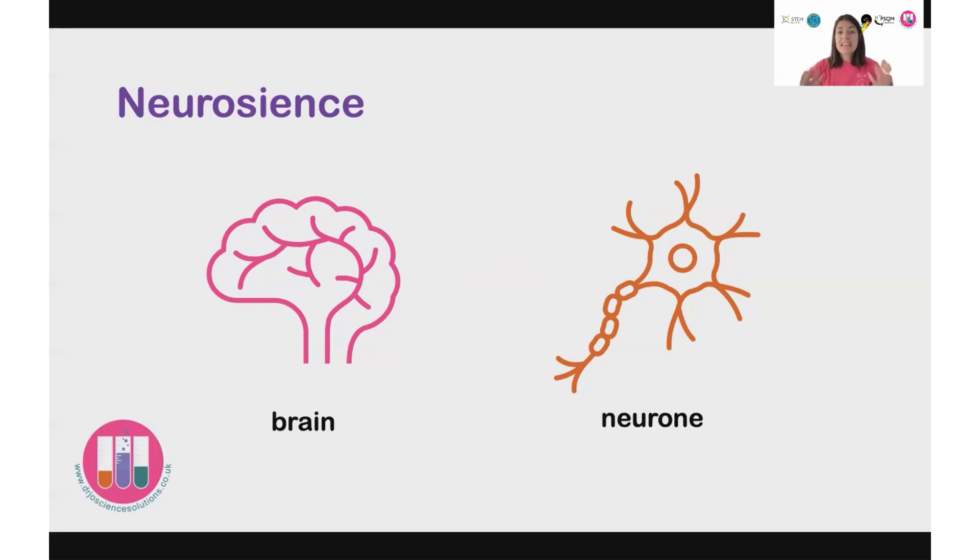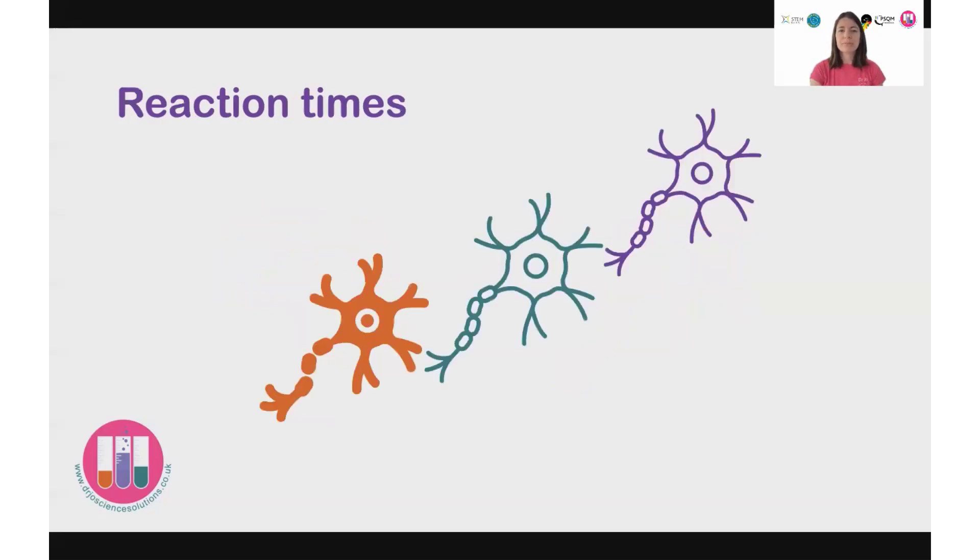And then they also take in information, process it within the brain, and then there's a response from those neurons as well. And those nerve cells or neurons connect and send a message or an impulse along the length of the neuron, an electrical impulse that then turns into a chemical impulse at the synapse to connect and jump over to the next neuron.